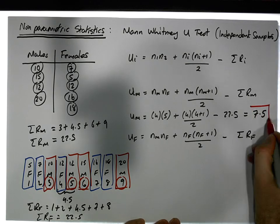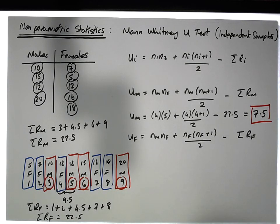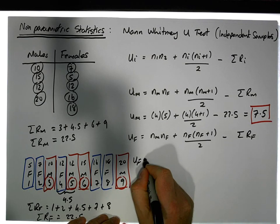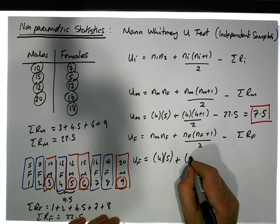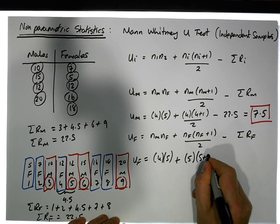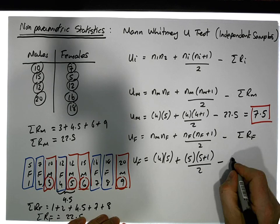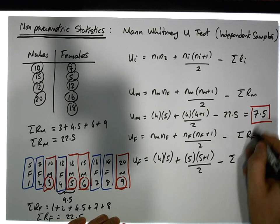For the females, we have U of F is the first sample size times the second sample size, plus sample size of the females, 5 times 5 plus 1, divided by 2, minus the sum of the ranks for the females, which is 22.5.